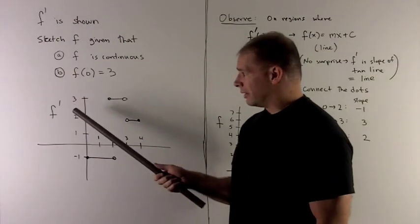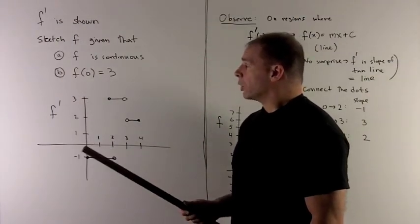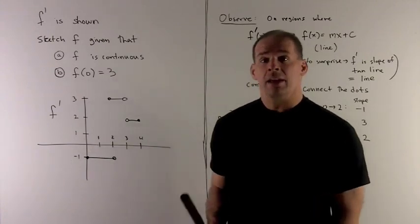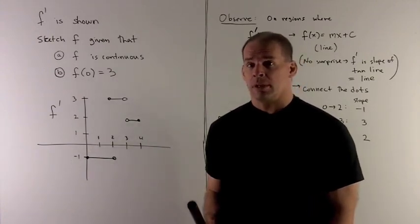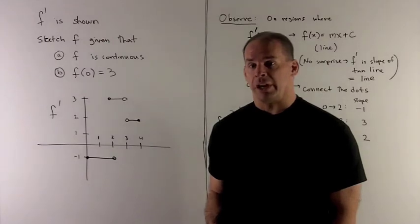I'm given a graph of f prime. We want to sketch f given that f is continuous and that f of 0 is equal to 3.